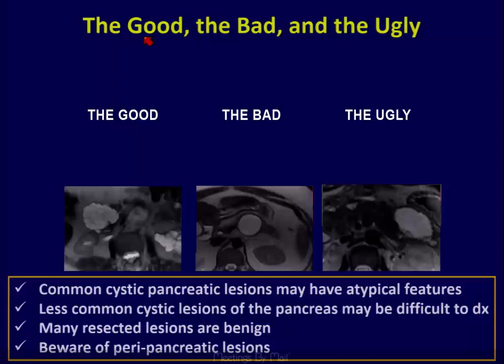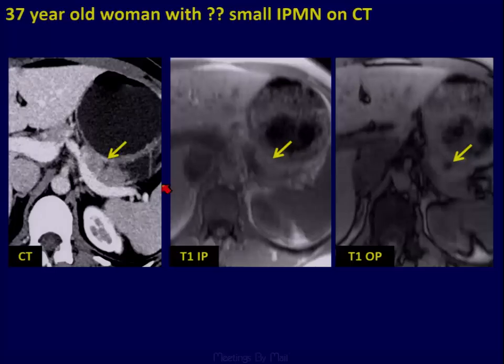Here is the clinical conundrum. Most common cystic pancreatic lesions may have atypical features. Less common cystic lesions of the pancreas may be difficult to diagnose. Many resected lesions are unfortunately benign, and beware of peripancreatic lesions that can often be confused as pancreatic lesions.